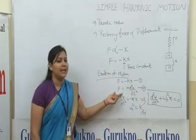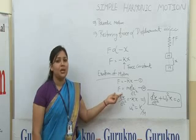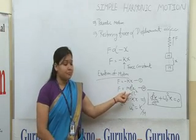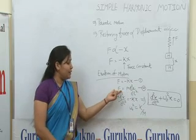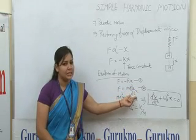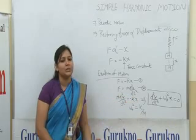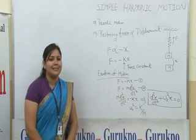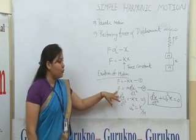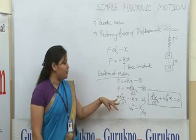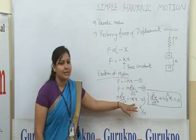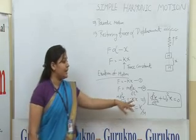According to Newton's second law of motion, for a body having mass M, the force F equals M d²X/dt², where d²X/dt² is the acceleration of the body. Since these two forces are equal, we can write M d²X/dt² equals minus KX.